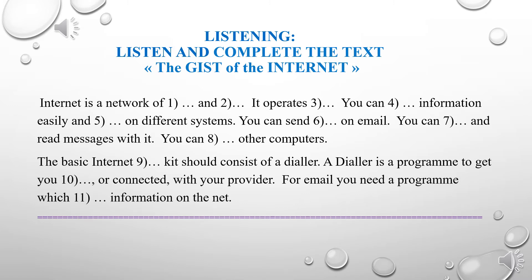What do I need to know about software? — The basic internet software kit should consist of a dialer. — A dialer? What's that? — It is a program to get you logged in or connected with your provider. — I see. And then I suppose I need email? — Yes, email is absolutely essential. And you probably also need Gopher. — What is that? — It is a program which searches out information on the net. You can get Gopher or one of the other programs for searching. Then there is FTP — you can download software from other computers with FTP. — You are getting a bit complicated for me. — You will soon get the idea. So all I have to do now is find a service provider.